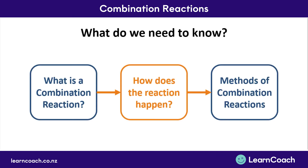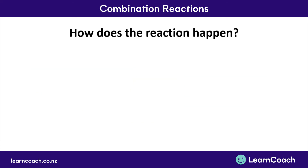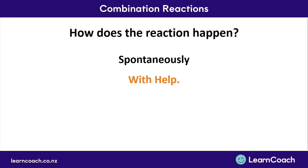Now that we know what a combination reaction is, we can move on to find out how the reaction actually happens. A combination reaction can occur two ways. It can happen spontaneously — meaning the reaction will just occur if the two compounds come in contact with each other. Otherwise, the reactions will require help, which can come in various forms, in particular light.